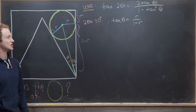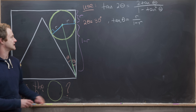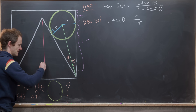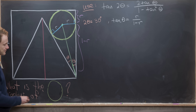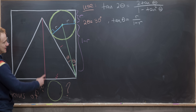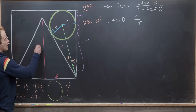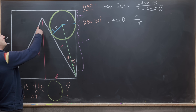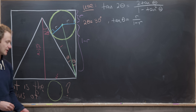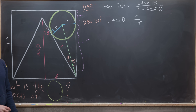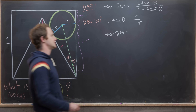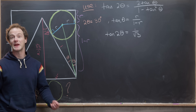We can compute tan(30°) easily using the equilateral triangle. Dropping an altitude from the top vertex to the base splits the base into length 1/2. The full side is 1, so by the Pythagorean theorem the altitude is √3/2. This altitude also bisects the 60° angle, giving a 30° angle. Therefore tan(2θ) = tan(30°) = (1/2) / (√3/2) = 1/√3.